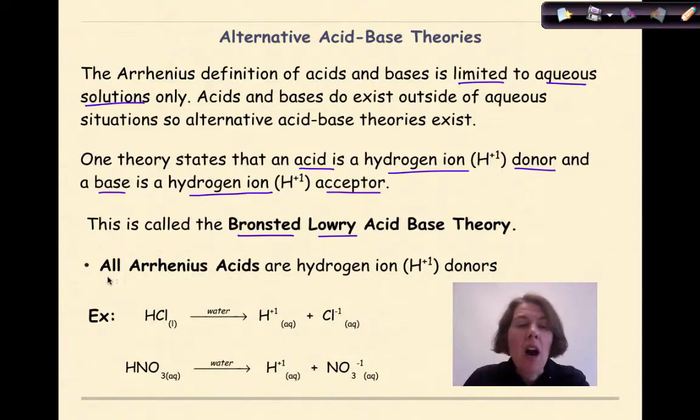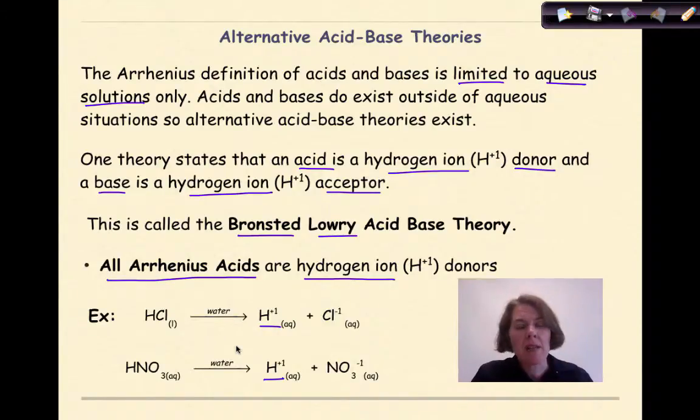So in this theory, all Arrhenius acids are hydrogen ion donors. In other words, when that acid ionizes, it's always going to produce a hydrogen ion. So HCl in water will produce hydrogen ions. HNO3 in water will produce hydrogen ions. And this is a good thing, because that means the definition for the Arrhenius acids, which we've already learned, also applies to the Bronsted-Lowry definition of acid.